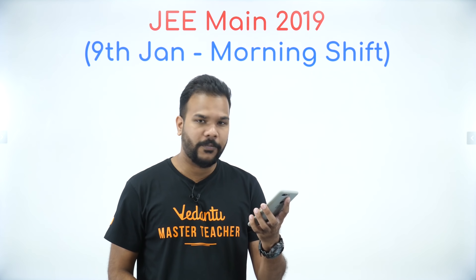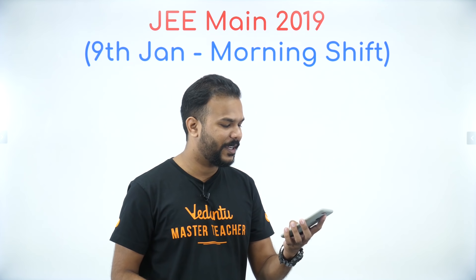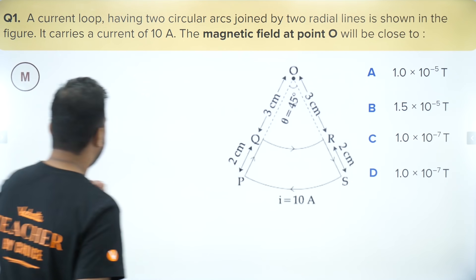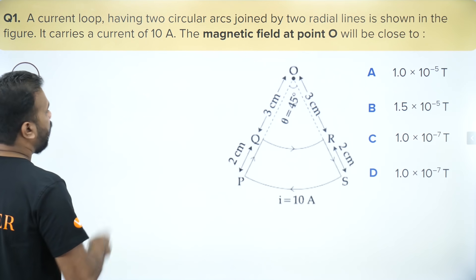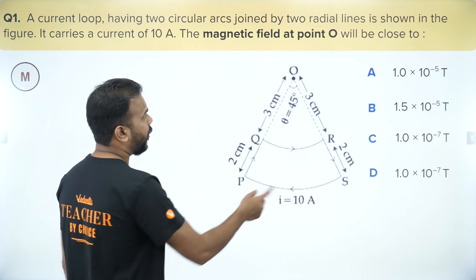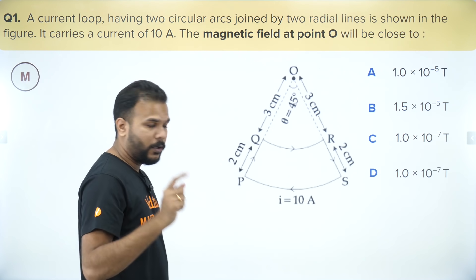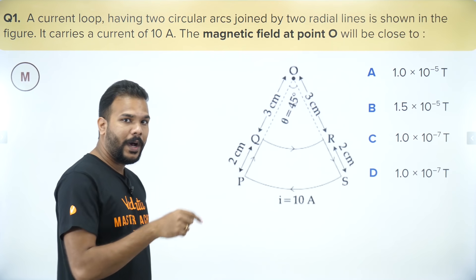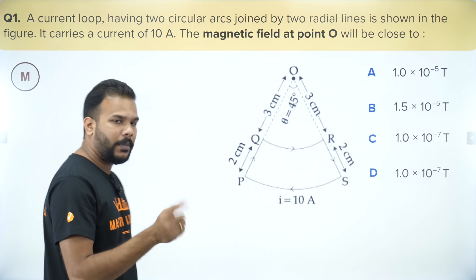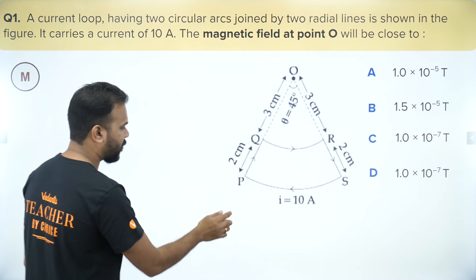Starting the stopwatch. The very first question looks like it is from magnetic effect of electric currents — we need to find the magnetic field at a point, which we can do using μ₀I/2R × θ/2π. Something doable but not right at your fingertips, so I am marking it as mediocre.